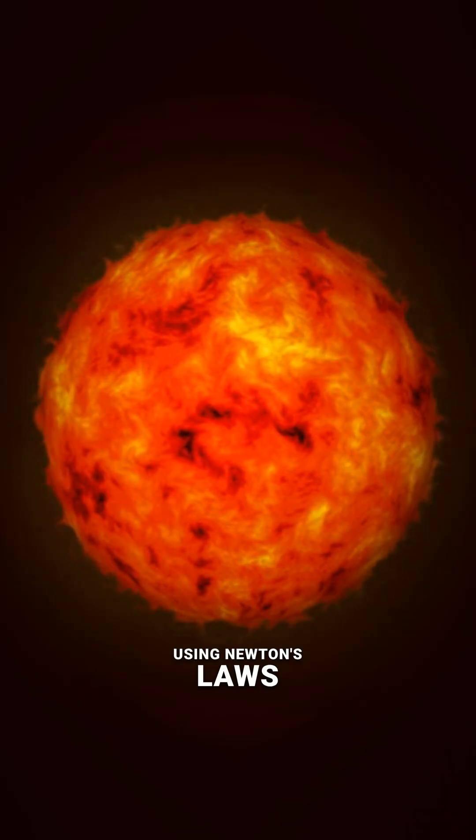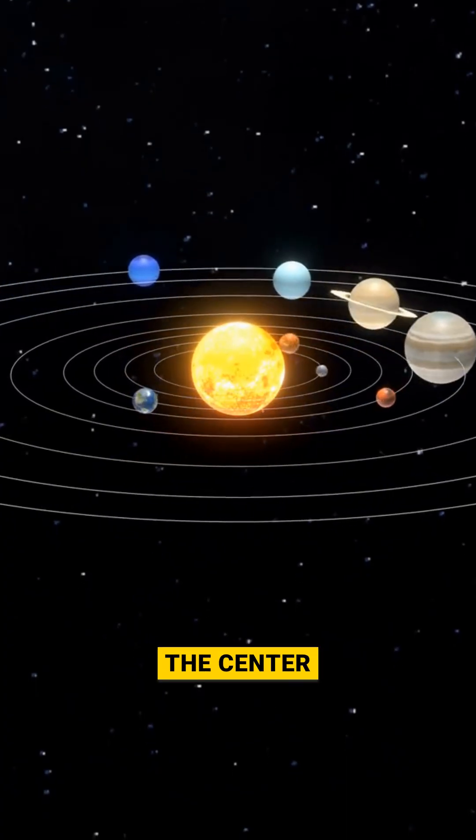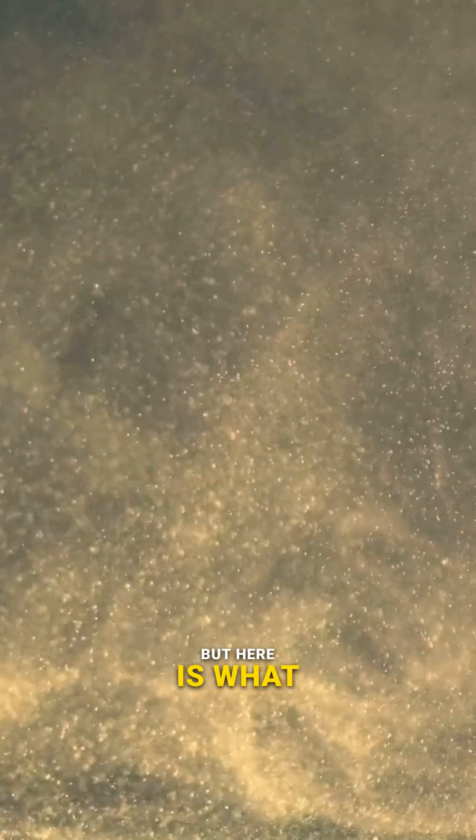Using Newton's laws, she expected the stars on the edge of the galaxy to move slower than the stars near the center, just like planets farther from the sun move slower. But here is what she found.